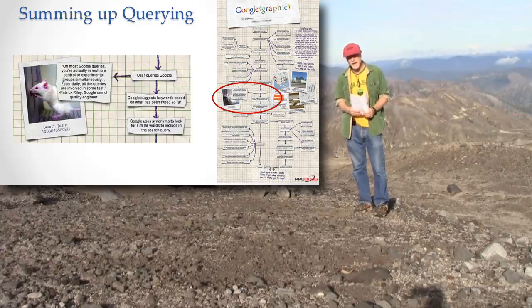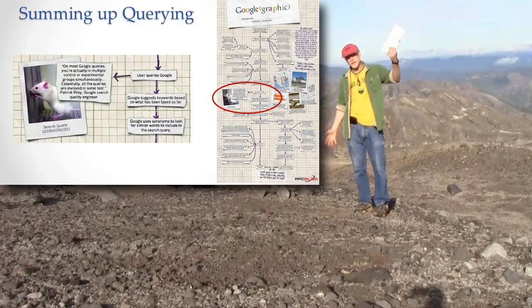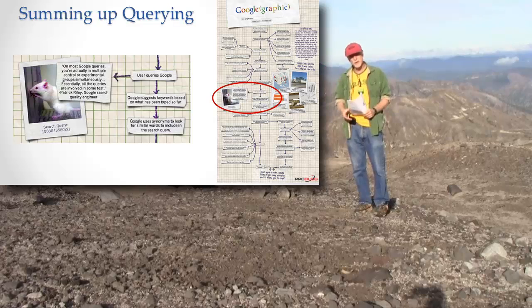Google goes out and indexes all these things. It puts it in its cache. It makes this enormous alphabetical list of words, citing where it came from — the web page as well as the position on the web page.